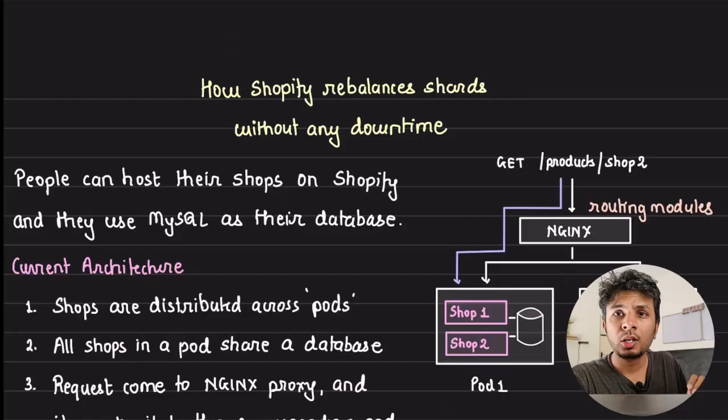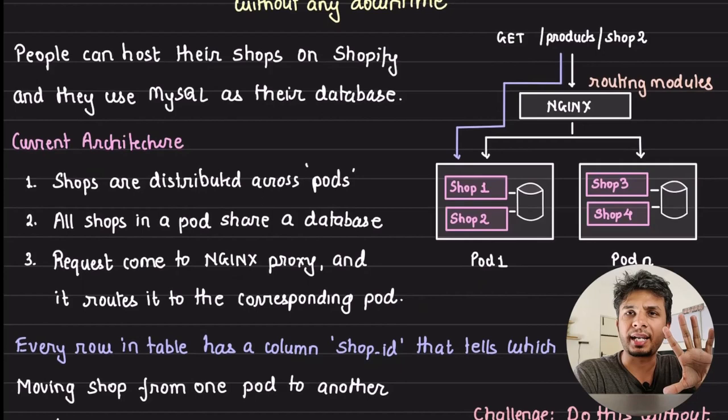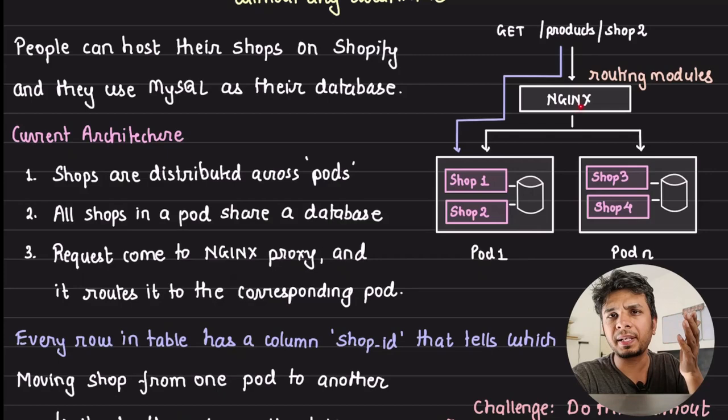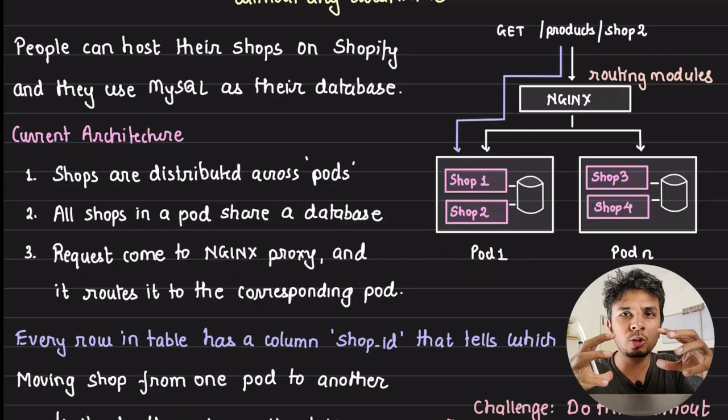People can host their shops on Shopify. Shopify uses MySQL as their primary database. When a request comes in, it hits the front-end proxy — typically Nginx. Nginx has a routing module that routes the request to the corresponding pod. A pod is a logical grouping of shops sharing a common database. For example, shop 1 and shop 2 are in pod 1, sharing the same database.